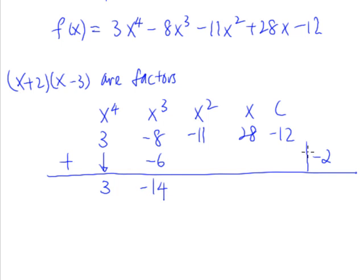So negative 14 multiplied by negative 2, that will give us a positive 28. So 28 minus 11, that will give us a 17.